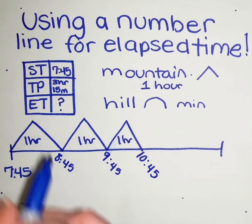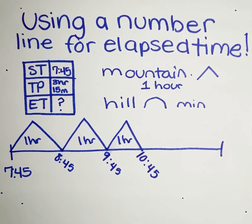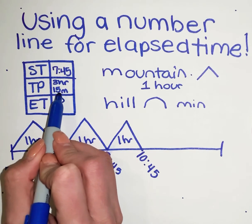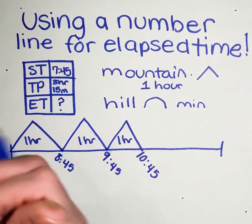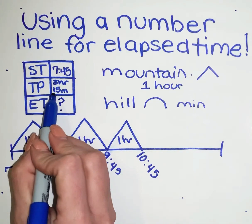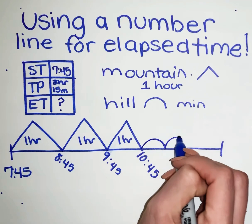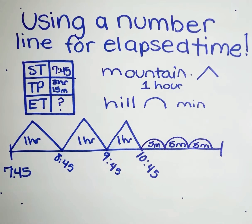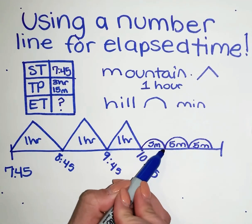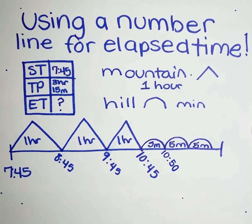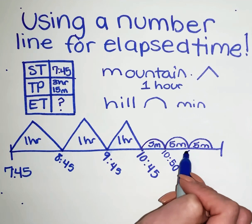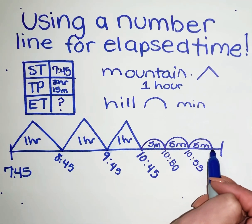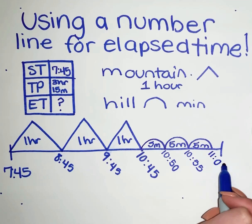Now we are done with all of our hours and we're moving on to our minutes. I would have kids break this down into smaller intervals — five-minute jumps. I know that counting by fives gives me 5, 10, 15, so I'm going to make three hills, and each one represents five minutes. So 10:45 plus five minutes is 10:50, plus five minutes is 10:55, plus five minutes is 11:00.